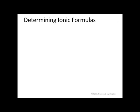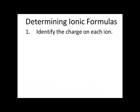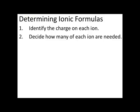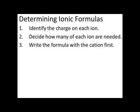Let's look at determining ionic formulas in detail. Every time you determine an ionic formula, follow the same basic process. First, identify the charge on each ion — whether it's +1, +2, -2, or any other number. Then decide how many of each ion you'll need to ensure their charges add up to zero. Finally, write your chemical formula, always writing the cation first. Let's try a couple of examples.